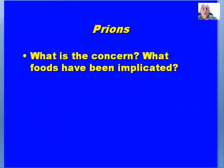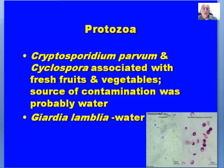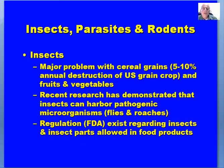Prions — what is the concern and what foods have been implicated? We haven't heard much about them since the early mad cow outbreaks, but it's something you should be familiar with. Protozoa can also cause food deterioration and have been associated with foodborne illness outbreaks. Both Cryptosporidium and Cyclospora are associated with fresh fruits and vegetables, with contamination probably resulting from water used for irrigation. Giardia lamblia is another one found in water, also referred to as 'beaver fever.'